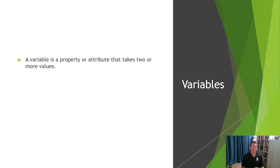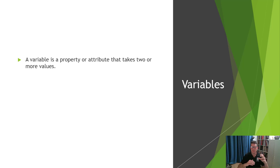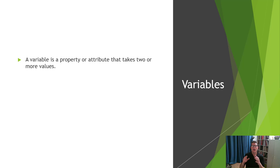A variable is a property or attribute that takes two or more values. When we talk about a variable, it's the 'thing,' and then there are values for those variables. For example, hair color is a variable, and black, brown, white, gray, blonde, and red are all values that the variable 'hair color' can take.